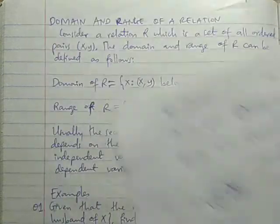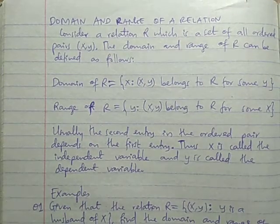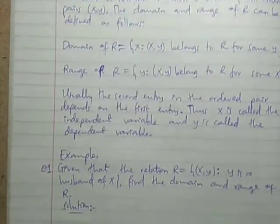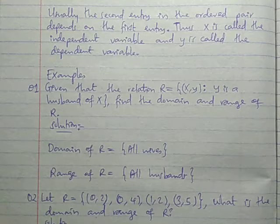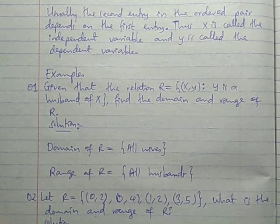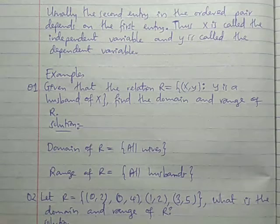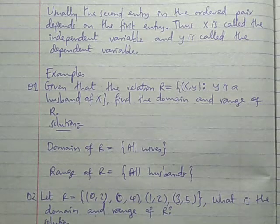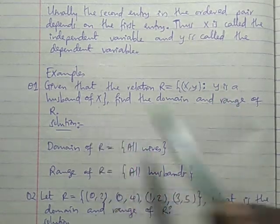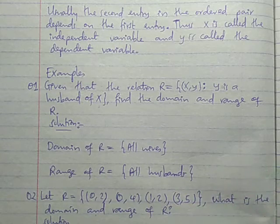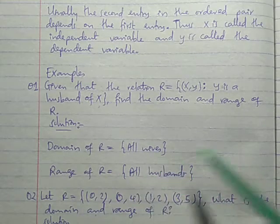Tuone maswali sasa. Nimesha kupa explanation za domain and range. For example, given the relation R which is equal to a set of ordered pairs (X, Y), whereby Y is the husband of X. Domain simply would be the set of all wives.